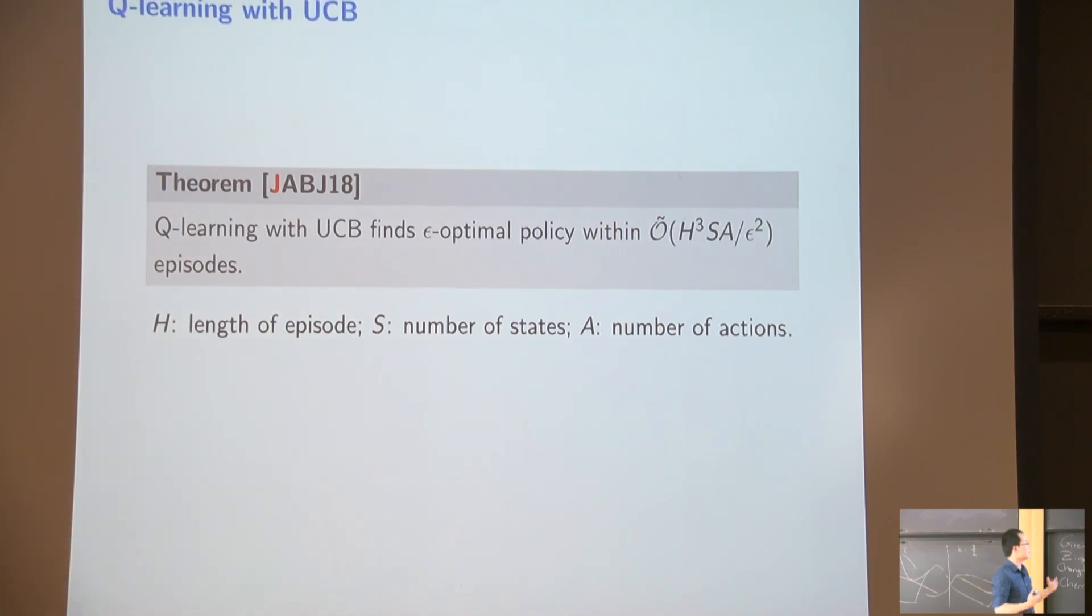So this is essentially the results we can prove. This is a joint work with Jio-Yuan Alenzu, Sebastian Bubeck, and Michael Jordan. And the first two authors are contributed equally. So in this work, we actually show Q-learning just with upper confidence bounds. We can find epsilon optimal policy in this number of episodes. Episodes means like how many times you play the games. This is H to the cube, sA over epsilon squared. Epsilon is like how optimal it is. And H is the length of each episode, the length of the game. And s is number of states, a is number of action.